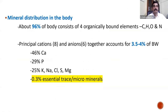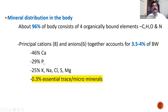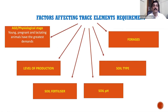About 96 percent of the body consists of four organically bound elements: carbon, hydrogen, oxygen, and nitrogen. The principal cations and anions — the mineral elements — account for 3.5 to 4 percent of body weight. Of that 3.5 to 4 percent, 46 percent is calcium in the skeletal system, 29 percent is phosphorus also in the skeletal system, 25 percent is potassium, sodium, chlorine, sulfur, and magnesium combined, and only 0.3 percent is micro minerals. Although only 0.3 percent, they play a very vital role in the health and productivity of the animals.